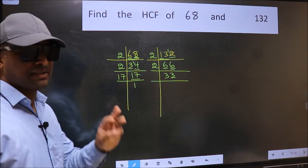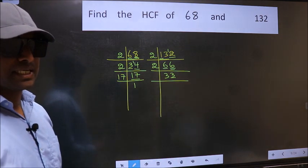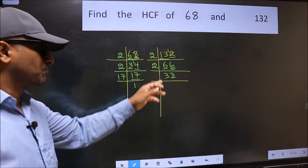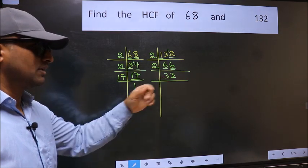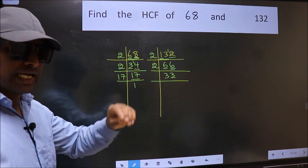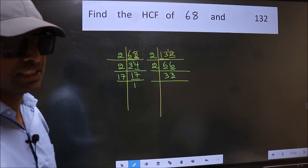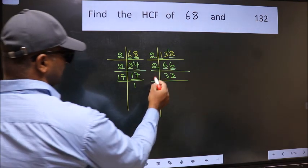Next prime number 3. To check divisibility by 3, we should add the digits. 3 plus 3, we get 6, and 6 is divisible by 3. So this number also divisible by 3. So take 3.